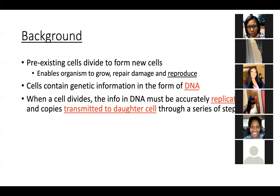Cells contain genetic information in the form of DNA. DNA is the unit or content of heredity — that is what is actually passed from one generation to the next, from parent to offspring. You're inheriting DNA from both your mom and dad. In our next unit, we're going to take a look at how that happens from a genetic standpoint.